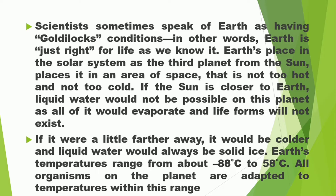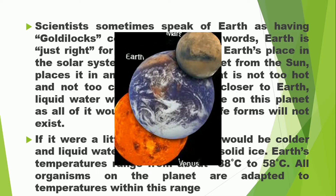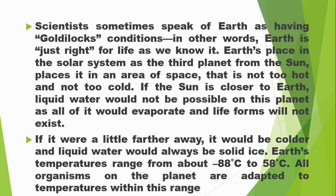Scientists sometimes speak of Earth as having Goldilocks conditions — in other words, Earth is just right for life as we know it. Earth's place in the solar system as the third planet from the Sun places it in an area of space that is not too hot nor too cold. If the Sun were closer to the Earth, liquid water would not be possible as all of it would evaporate and all life forms would not exist. If it were a little farther away, it would be colder and liquid water would always be solid ice. Earth's temperatures range from about negative 88 degrees Celsius to 58 degrees Celsius, and all organisms on the planet are adapted to temperatures within this range.